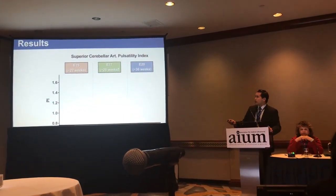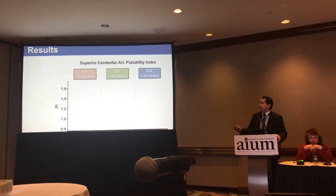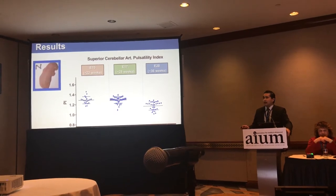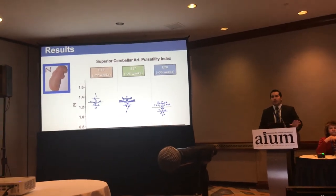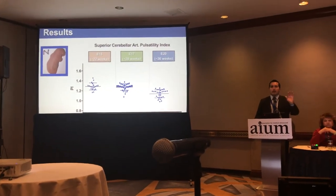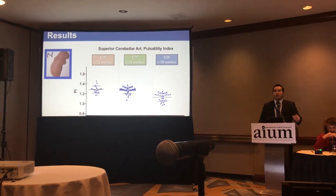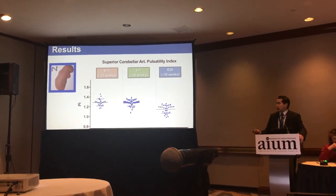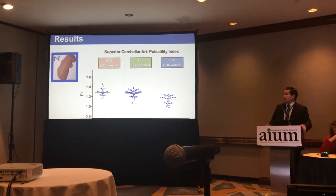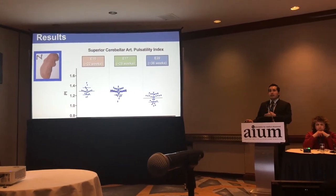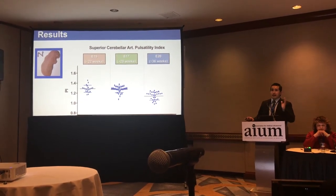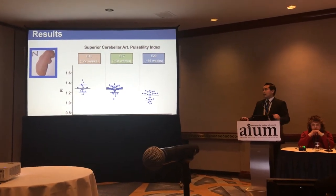We checked the pulsatility index of the superior cerebellar artery at day 15, day 17, and day 20. We found that in fetuses without open spina bifida — normal fetuses, fetuses with spina bifida occulta, or fetuses that did not develop neural tube defects in the retinoic acid group — the pulsatility index of the superior cerebellar artery decreased along the pregnancy, resembling the same pattern as the middle cerebral artery. This happened because there is a spur of growth of the cerebellum at the end of the second trimester and beginning of the third trimester of pregnancy.